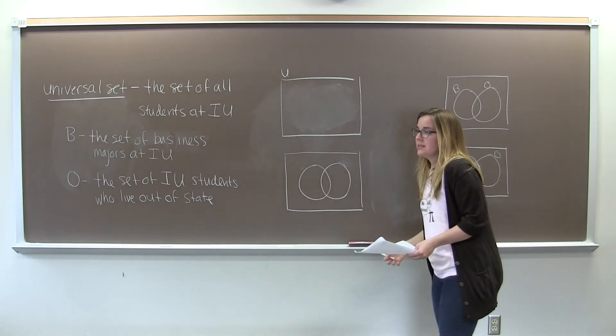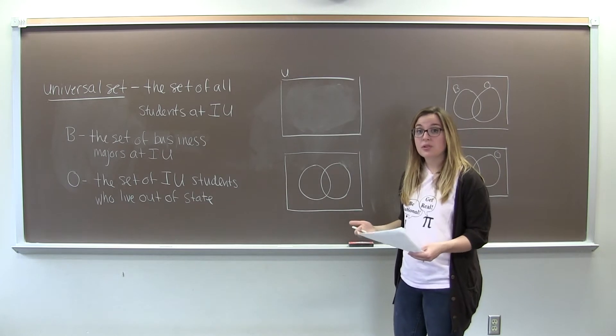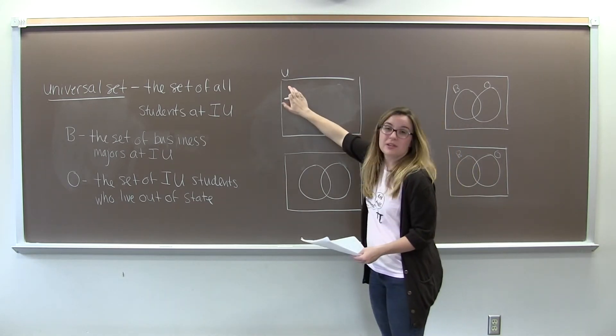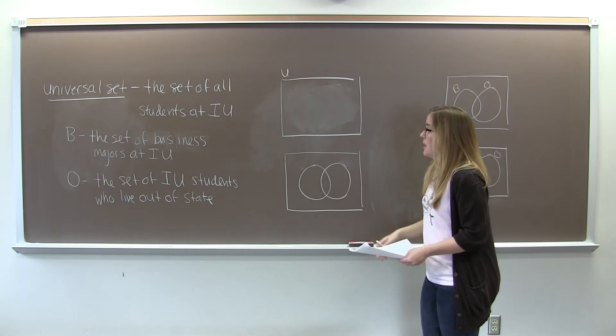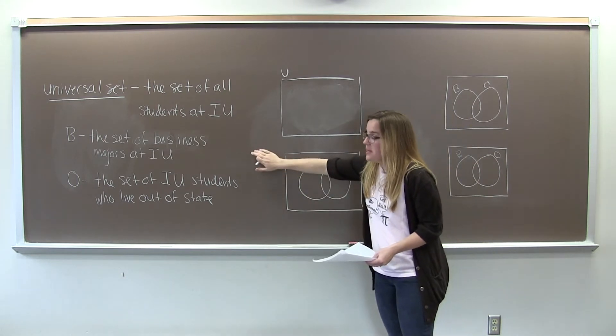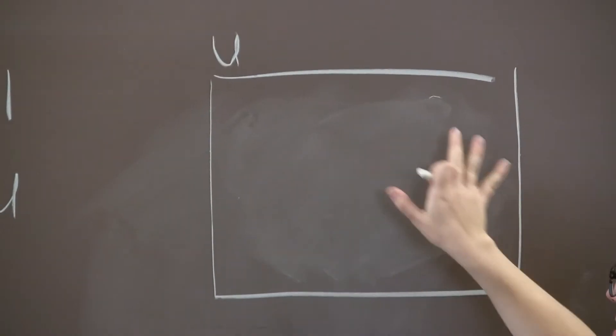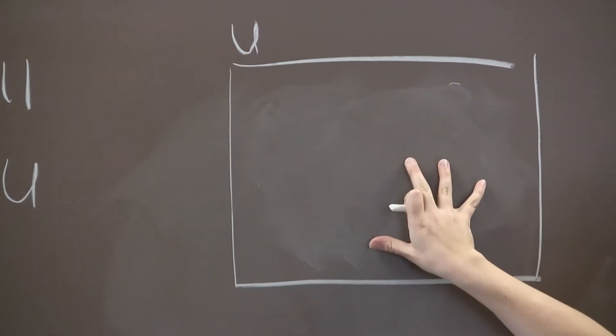So how do we represent this? Well, the first thing we do is we make our universal set a rectangle and we label it U, typically in the top left-hand corner. So now our job is to represent B and O inside of this rectangle, because inside of this rectangle is going to represent all the students at IU.